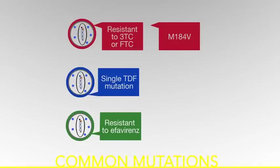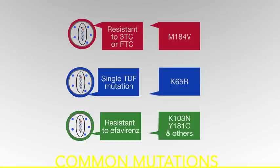Tenofovir, the common mutation for tenofovir is K65R, and the common mutation for efavirenz is K103N or Y181C. So when you see these mutations on a genotype, these are the drugs that they're likely to cause resistance to.